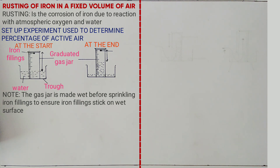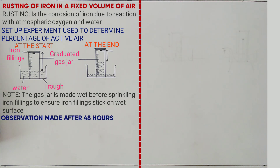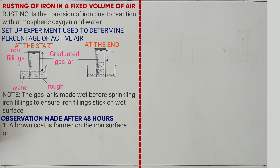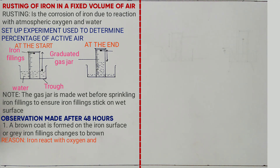The experiment is left for 48 hours. The observation made after 48 hours: first, a brown coat is formed on the iron surface — that is, grey iron filings change to brown. The reason for that observation is iron reacts with oxygen and water to form hydrated iron(III) oxide, which is rust — the brown coat.